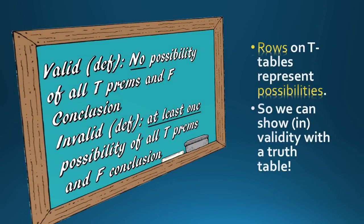Validity means there's no possibility of all true premises and a false conclusion. Invalidity is the opposite — there's at least one such possibility. Since the rows on our truth table running left to right represent possibilities, we can show validity with truth tables.